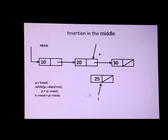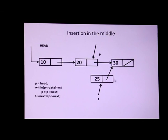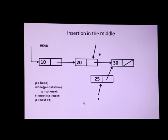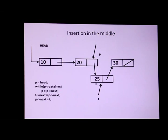So, first I have to do T.next = P.next. After execution of this line, T's next part will contain the address of 30. Now easily, P's next part should contain the address of T, written as P.next = T. After the execution of this line, the pointer rearrangement will be complete. I have now inserted 25 between 20 and 30. After insertion, the list is: 10, 20, 25, and finally 30.